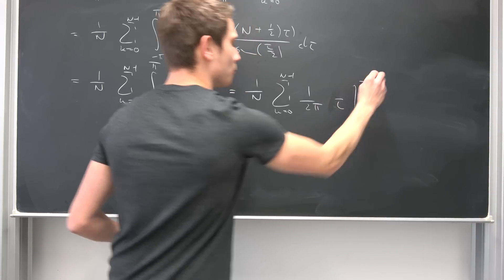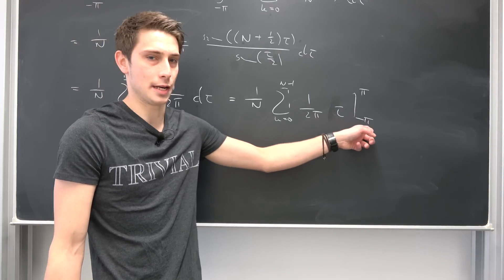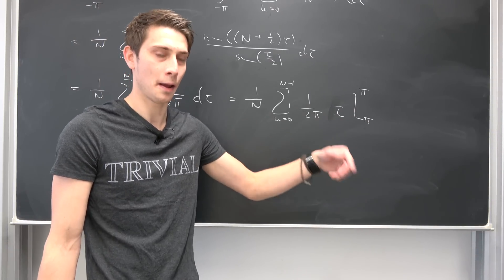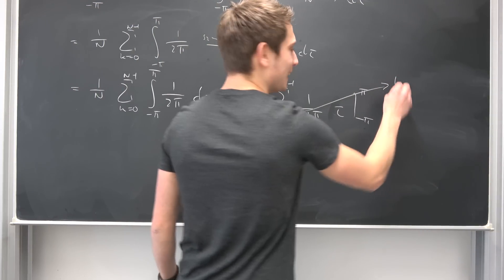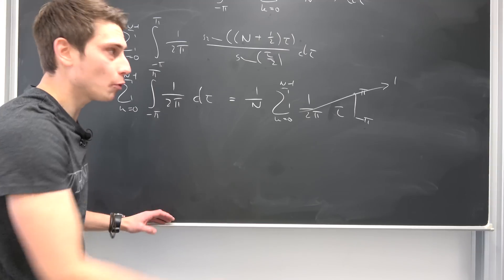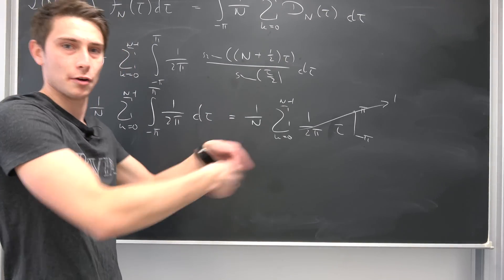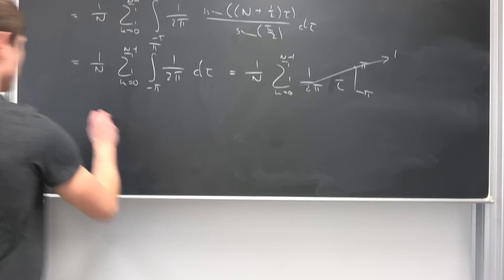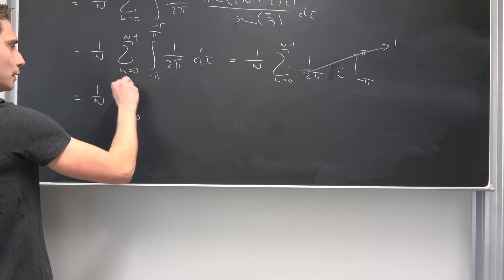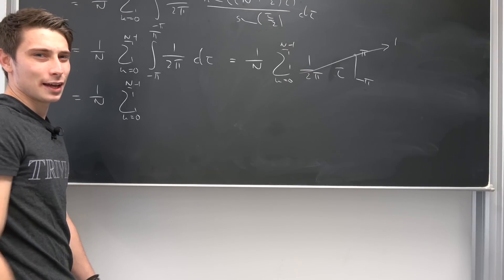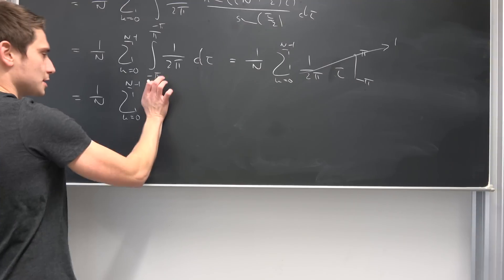So this is going to provide us with 1 over n, and then we have a sum running from 0 to n minus 1 of 1 over 2 times pi times tau, evaluated from negative pi to pi. The upper bound gives us pi, minus negative pi also gives pi — pi plus pi is 2 times pi. So this right here is just going to be 1. This is absolutely amazing — we have derived that this integral is indeed just 1. That's just a property of those Fourier summability kernels.